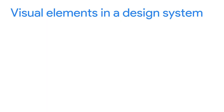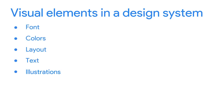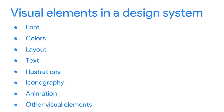At this stage of the design process, one of your goals is to document the decisions you're making about your visual designs. This means documenting the font, colors, layout, text, illustrations, iconography, animation, and other visual elements that your product includes as part of your design system.